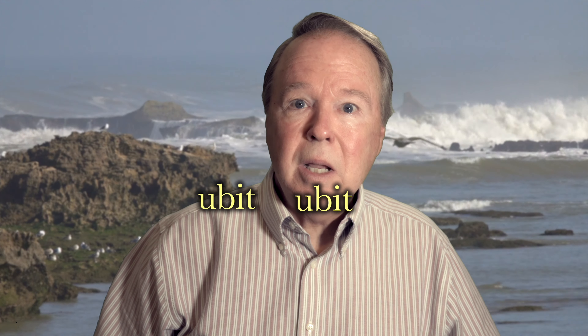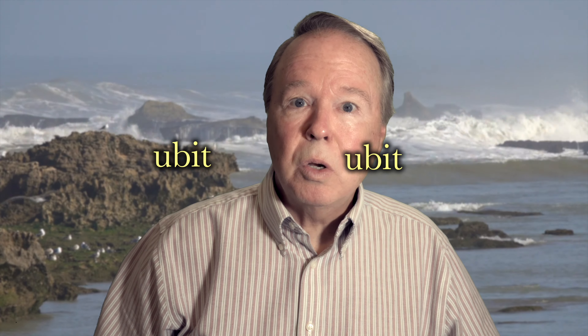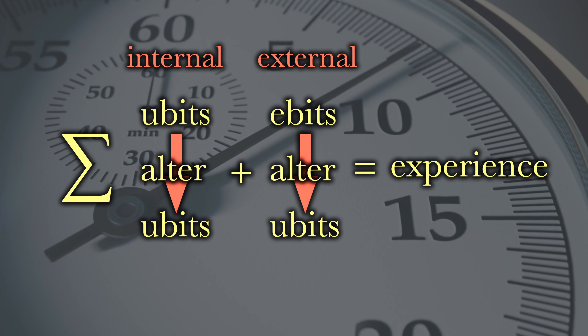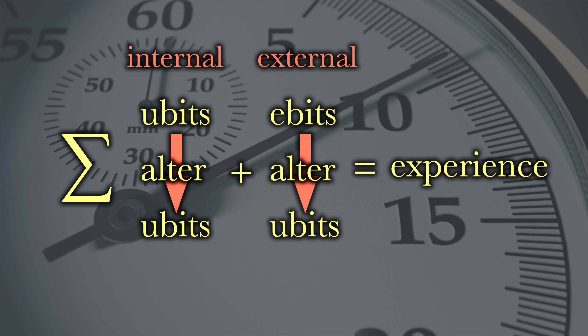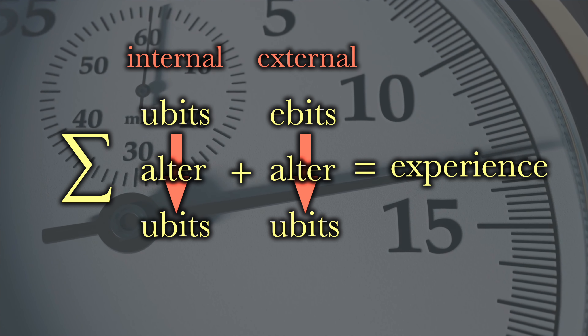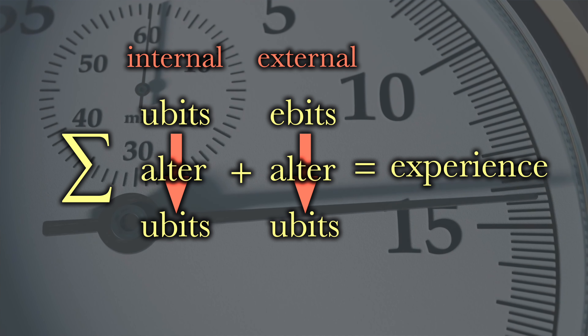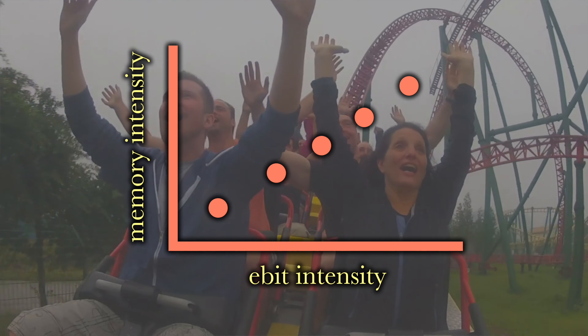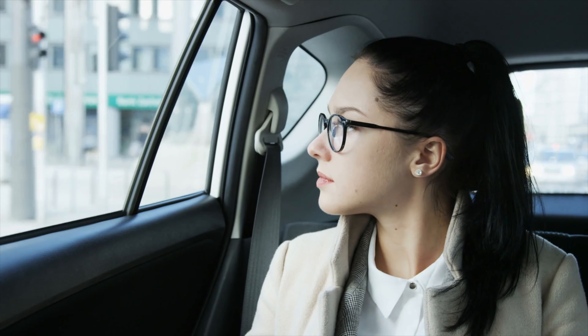The U-bits of your body constantly bounce off each other, causing internal changes, while E-bits cause friction with them at the edges. Over a certain period of time, the sum of altered U-bits and E-bits affecting them adds up to an experience. The more intensely E-bits affect your U-bits, the more memorable the experience.